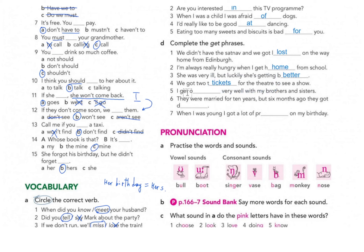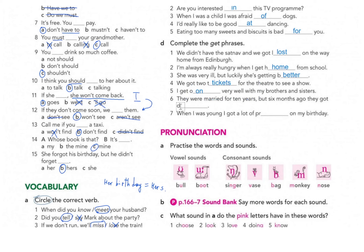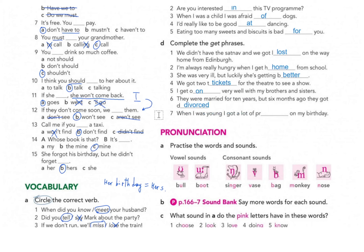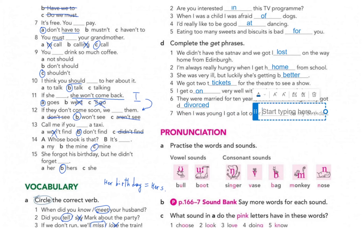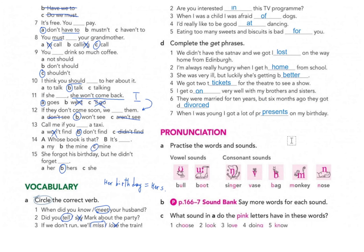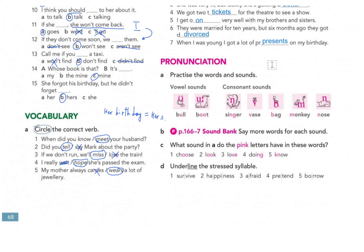Number five: 'I get on very well with my brother.' Number six: 'They were married for ten years but six months ago they got divorced.' Number seven: 'When I was young I got a lot of presents on my first day.' Exercise D is complete, so now we move to pronunciation.